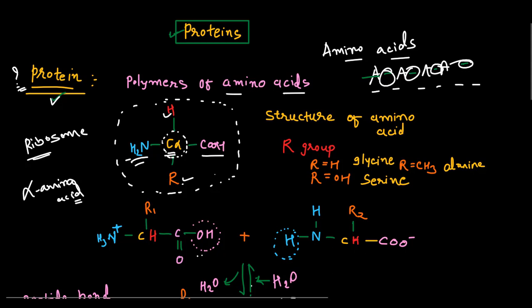The simplest amino acid is glycine, which contains only a hydrogen group instead of an R group. If a CH3 group is attached instead of R, the amino acid is alanine. If an OH group is attached, that is the serine amino acid. So amino acids differ from each other based on their R groups.